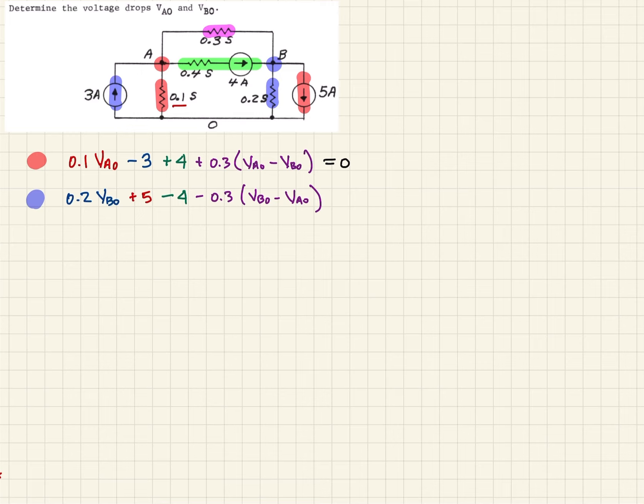And again, that's all the currents that are leaving and entering node B, so then we should be able to set those equal to 0. So now we have two equations and two unknowns.